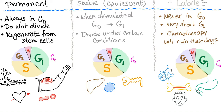What else? We have cardiac muscles, skeletal muscles, and neurons. That's why brain damage can be permanent — because your neurons usually do not divide.